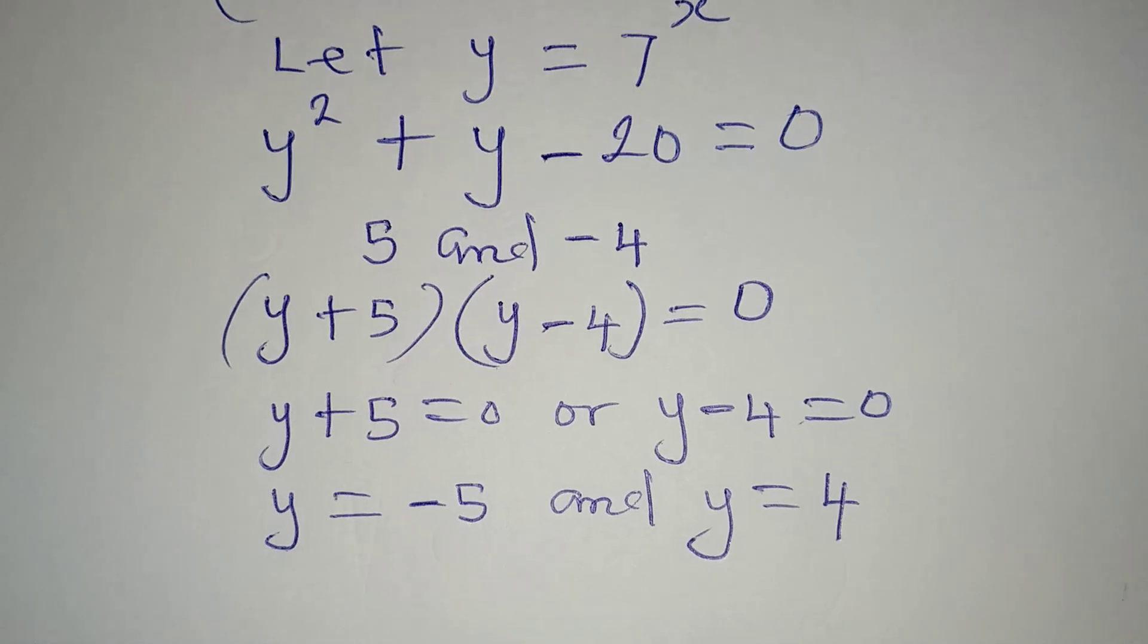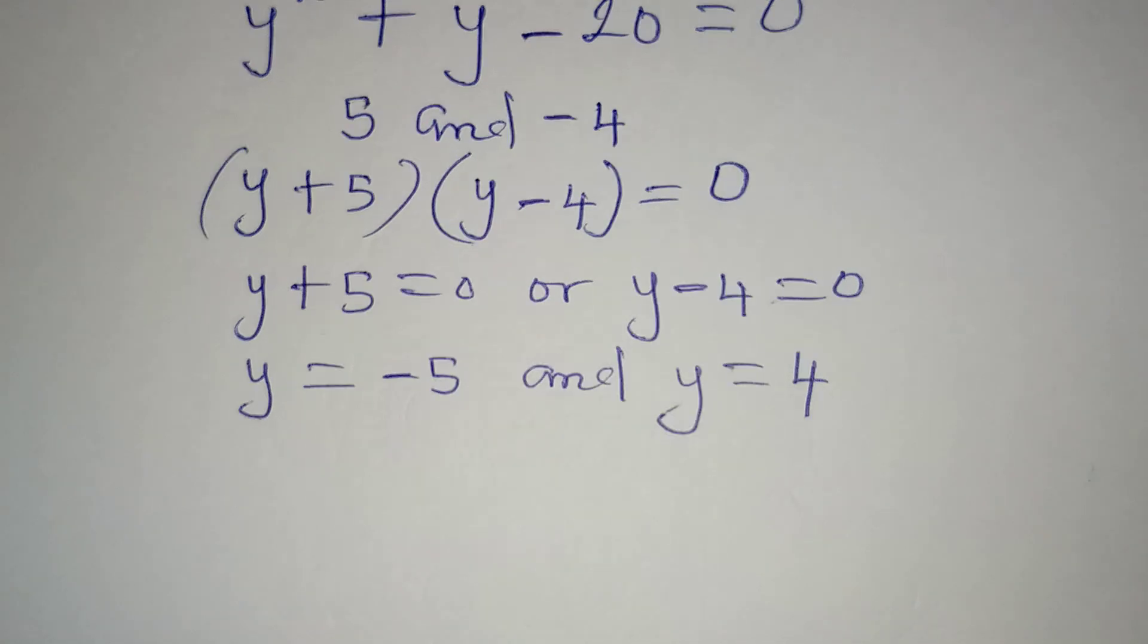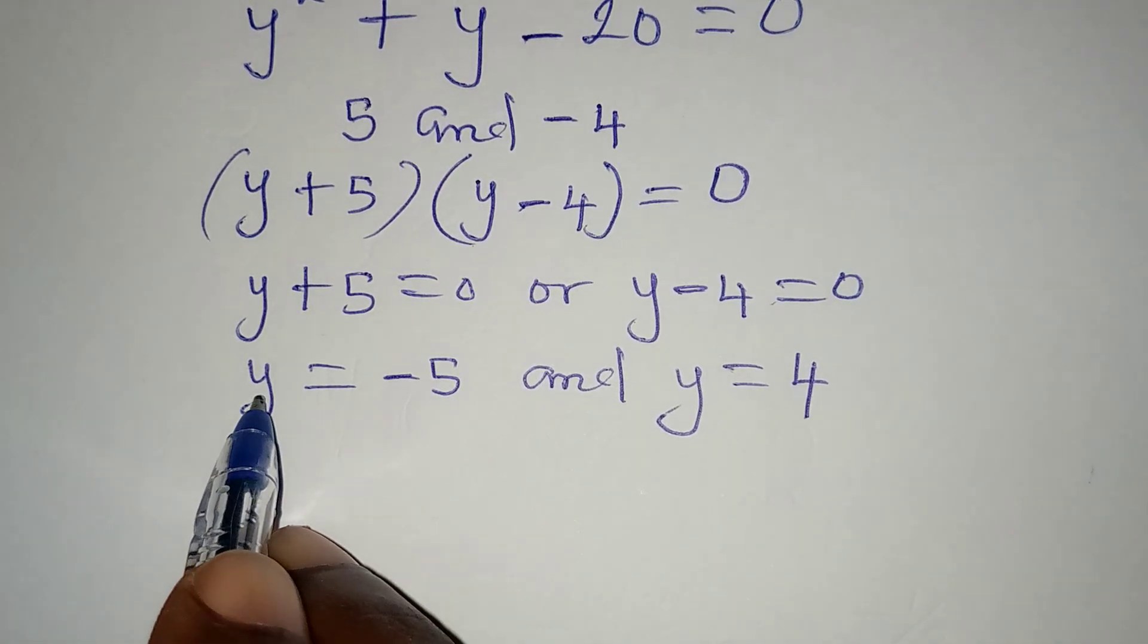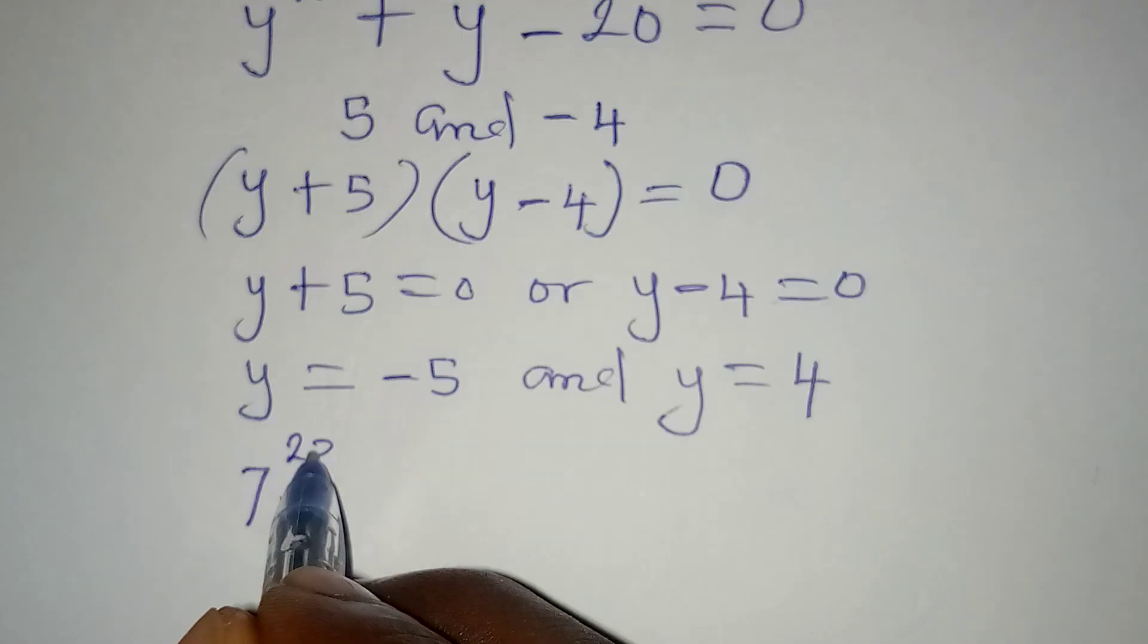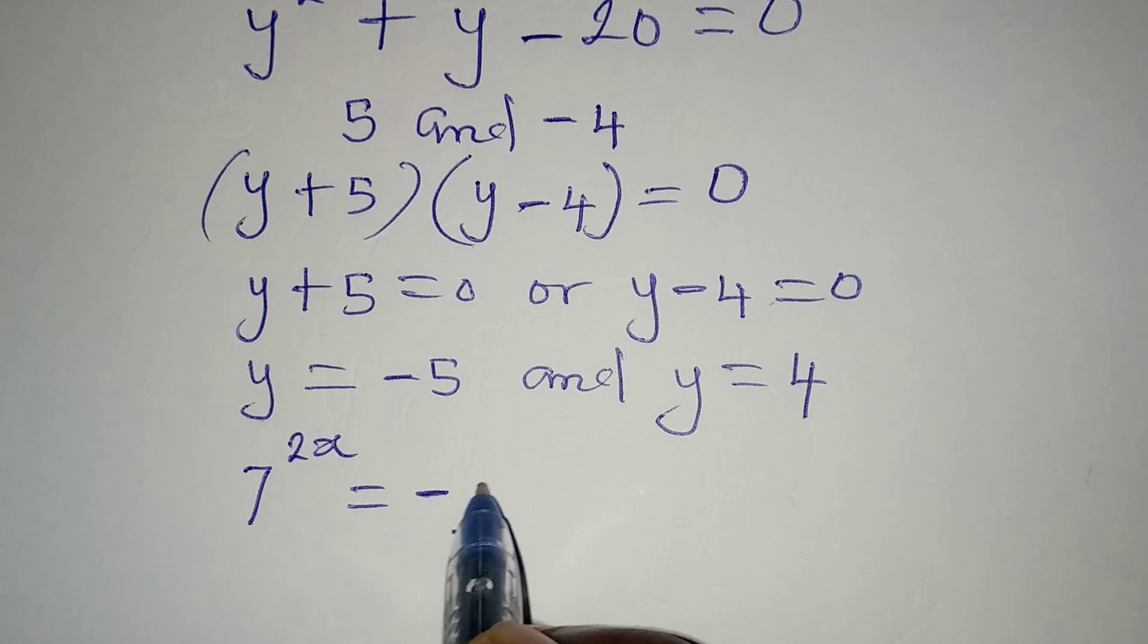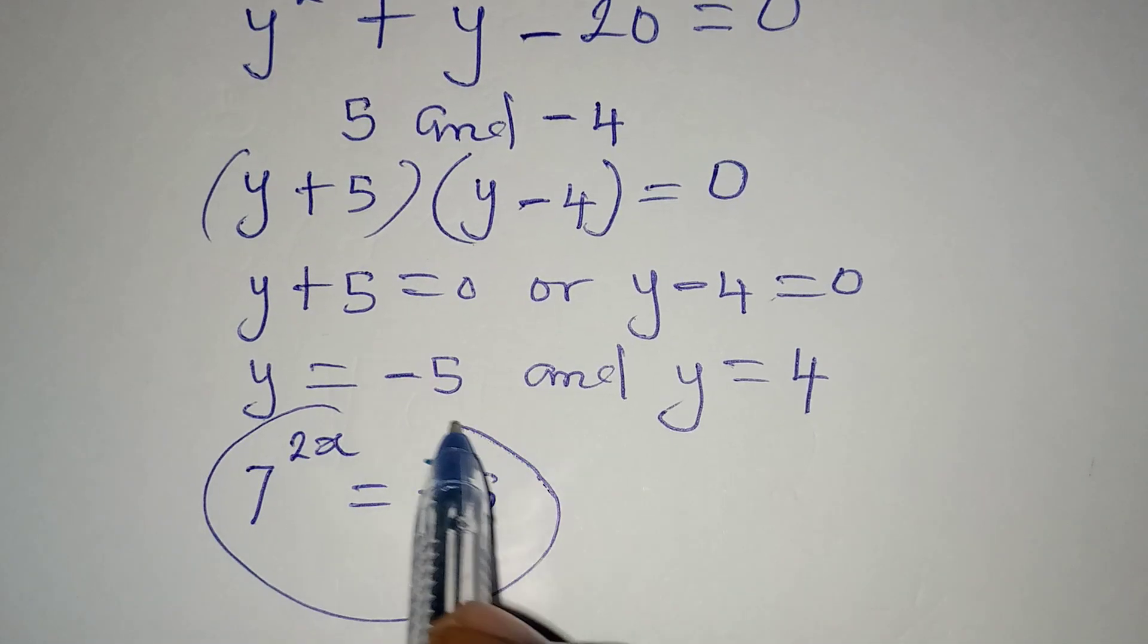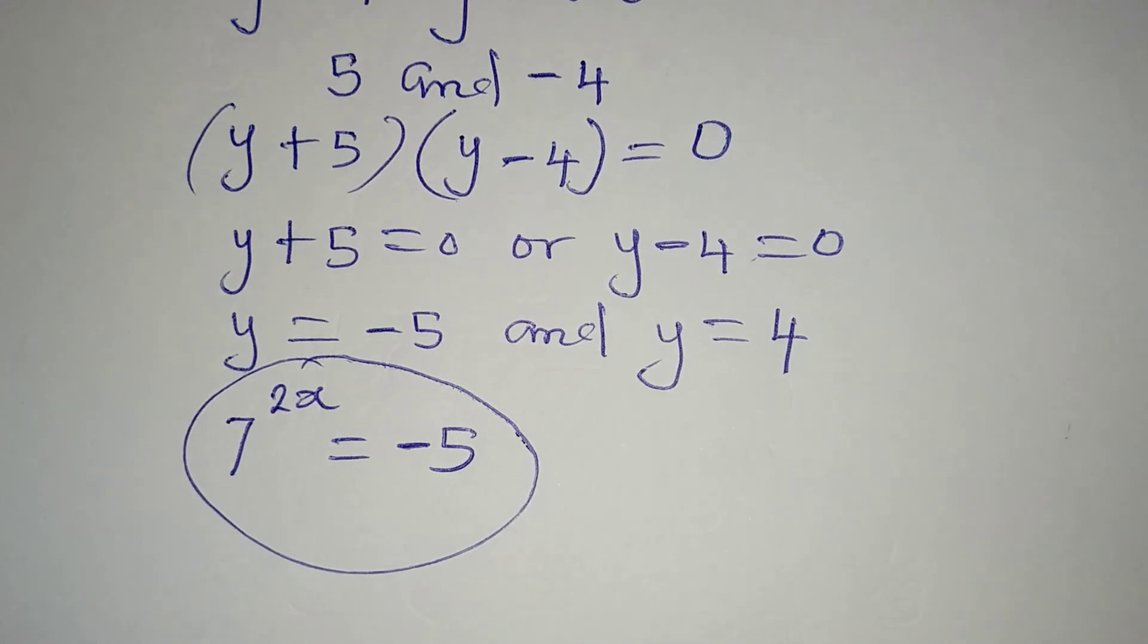Now let us go back to the problem that we were dealing with. Remember, we have that y is equal to 7 to the power of x. So 7 to the power of x is equal to minus 5, and this is going to lead us to complex numbers. So we'll leave that aside and work with the other side.